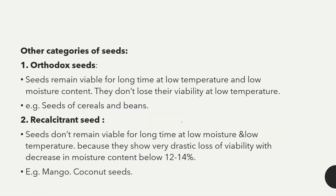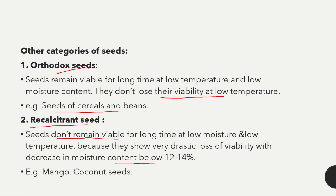Other categories of seeds are orthodox seeds and recalcitrant seeds. Orthodox seeds remain viable for a long time at low moisture and low temperature; they don't lose viability at low temperature — examples include cereals and beans. Recalcitrant seeds don't remain viable for long at low moisture and low temperature because they show drastic loss of viability with moisture content below 12 to 14 percent — examples include mango and coconut.